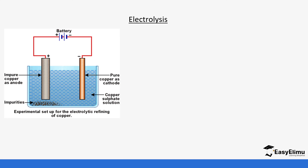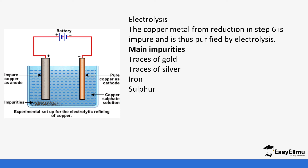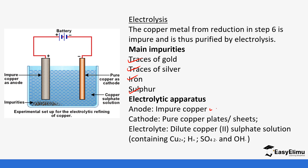The blister copper obtained from the roasting and reduction process has to be purified, and that's where electrolysis comes in. The copper metal from the reduction step is impure, so it is electrolyzed. Every time we talk about electrolysis, we need to determine the anode and the cathode. Some of the impurities are gold, silver, iron, and sulfur. The anode is going to be the impure copper — just as we said for lead — and the cathode is going to be pure copper. The electrolyte is going to be a solution of copper sulfate, which contains copper ions.